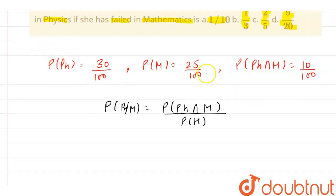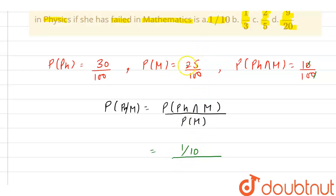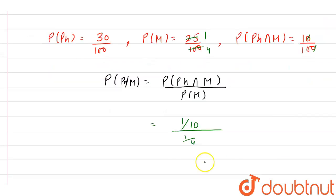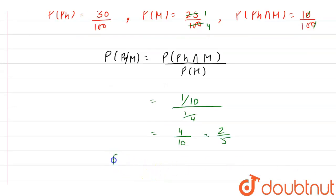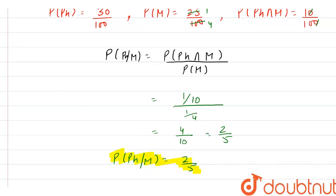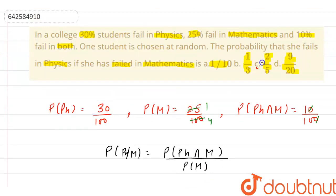Using this formula: the probability that she fails in both physics and mathematics is 10 by 100, which simplifies to 1 by 10. Dividing by P(M), which is 25 by 100 or 1 by 4, we get 1/10 divided by 1/4, which equals 4 by 10, that is 2 by 5. So the probability that she fails in physics given she had failed in mathematics is 2 by 5. Hence option C is correct.